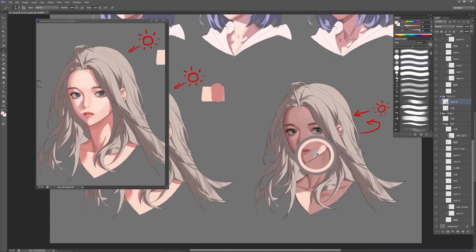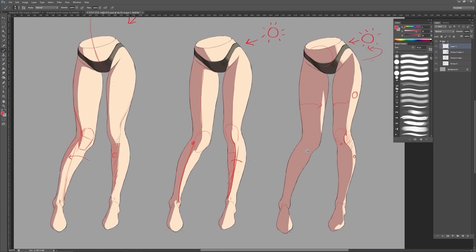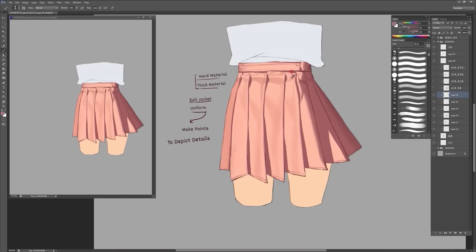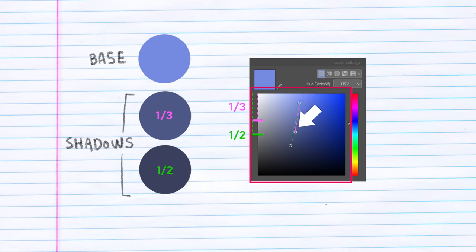She also acknowledges that one thing her art students often struggle with is not knowing which colours to pick for their shadows. You'll discover that Catan actually improvises a bit, and you'll hear her sharing her thoughts when picking colours — but she also has a great little rule of thumb: the shadow colour lies approximately between one-third and one-half of the range from the base colour. So if you have the entire colour window and this is your base colour, the shadow colour will typically lie somewhere in that range.